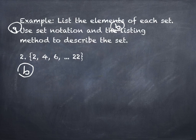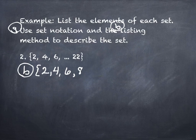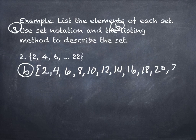For part B, the listing method: I need to list the numbers between 6 and 22, but they are multiples of 2, or even numbers, because the ones already listed are just the even ones. So I need 8, 10, 12, 14, 16, 18, 20, and 22. I just fill in the dots. That's the listing method.